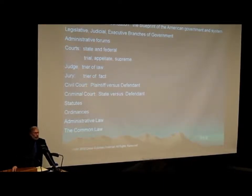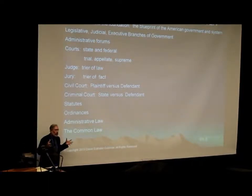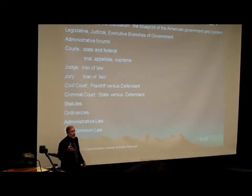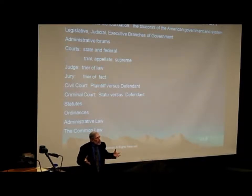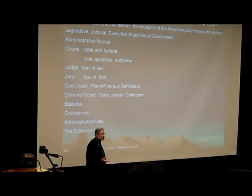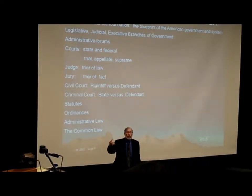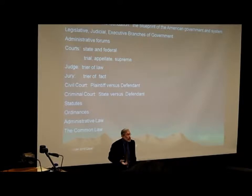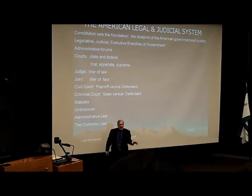Our law is based on these documents that set up and establish our judicial system. The US Constitution provides for a tripartite form of government — checks and balances. We have the executive, legislative, and judicial branch. When we look at the legal system, it is also tripartite: we have trial courts, appeals courts, and then a Supreme Court — both at the federal level and at the state level.